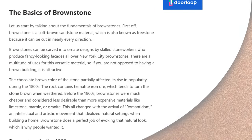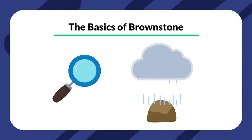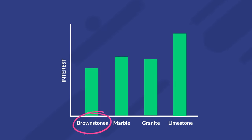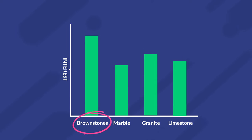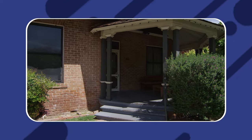The chocolate brown color of the stone partially drove its rise in popularity during the 1800s. The rock contains hematite iron, which tends to turn the stone brown when weathered. Before the 1800s, brownstones were much cheaper and considered less desirable than more expensive materials like limestone, marble, or granite. This all changed with the arrival of romanticism, an intellectual and artistic movement that idolized natural settings when building a home. Brownstone does a perfect job of evoking that natural look, which is why people want it.